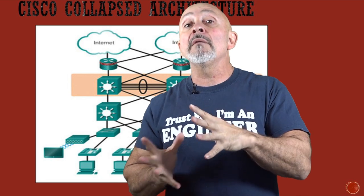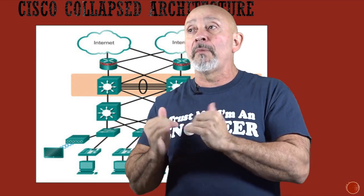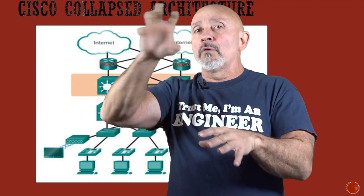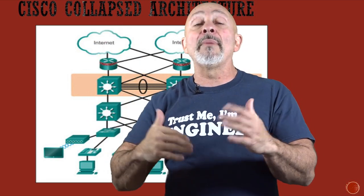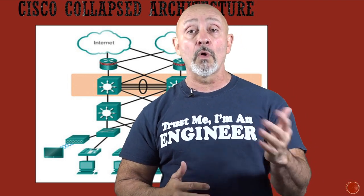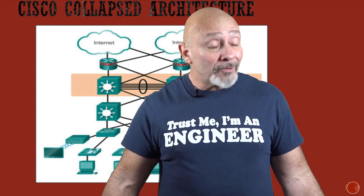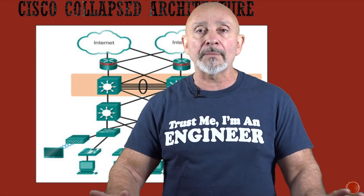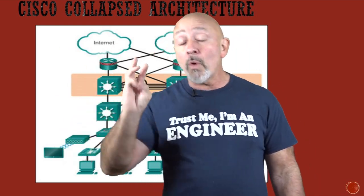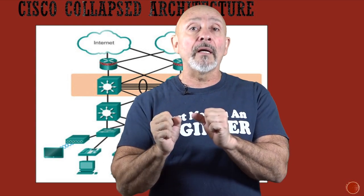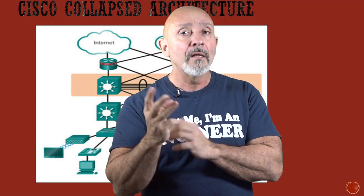In the collapsed core architecture, the core and distribution are meshed together. Before, you had a layer 2 switch that could only do so many things, and a router that could only do so many things. Now you combine them — best of both worlds in those two layers — while the access layer stays by itself doing what it always has with layer 2 switches. You still have core, distribution, and access, but now core and distribution are combined as a single layer while still being conceptually three distinct things.